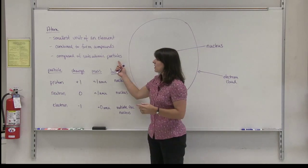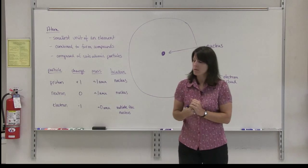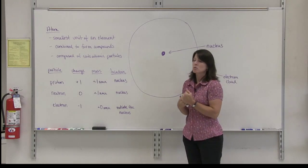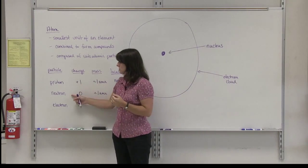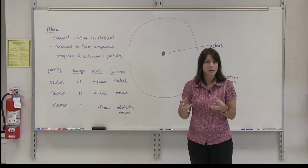The atoms themselves are made up of three different types of subatomic particles. Those subatomic particles are called protons, neutrons, and electrons, and they are combined to form the atom.